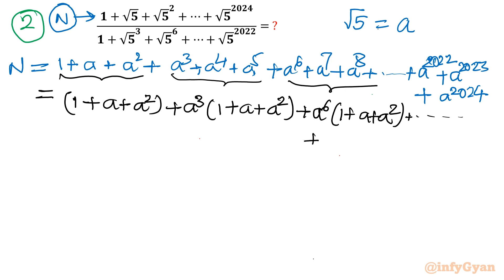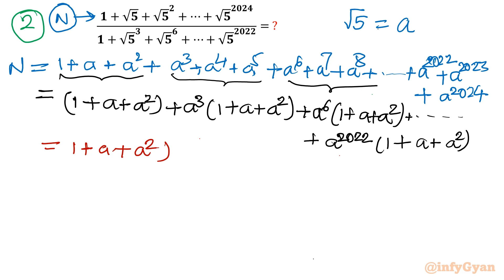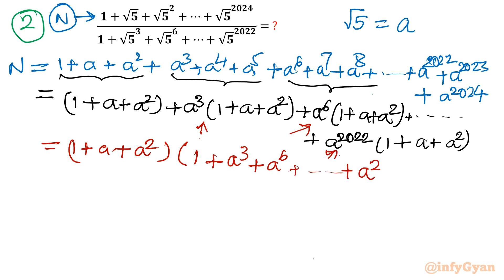And so on... for the last three terms, similarly I will take a²⁰²² common, giving (1 + a + a²). So you can see the bracket (1 + a + a²) appears throughout. Taking this complete bracket as a common factor gives us: (1 + a + a²) × [1 + a³ + a⁶ + ... + a²⁰²²]. And if you look at the denominator, it is the same bracket.